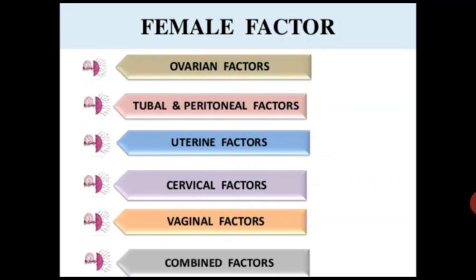Next are tubal and peritoneal factors. There are problems in the fallopian tubes, including obstruction of fimbria and adhesion formation. There may also be impaired transfer within the tube.